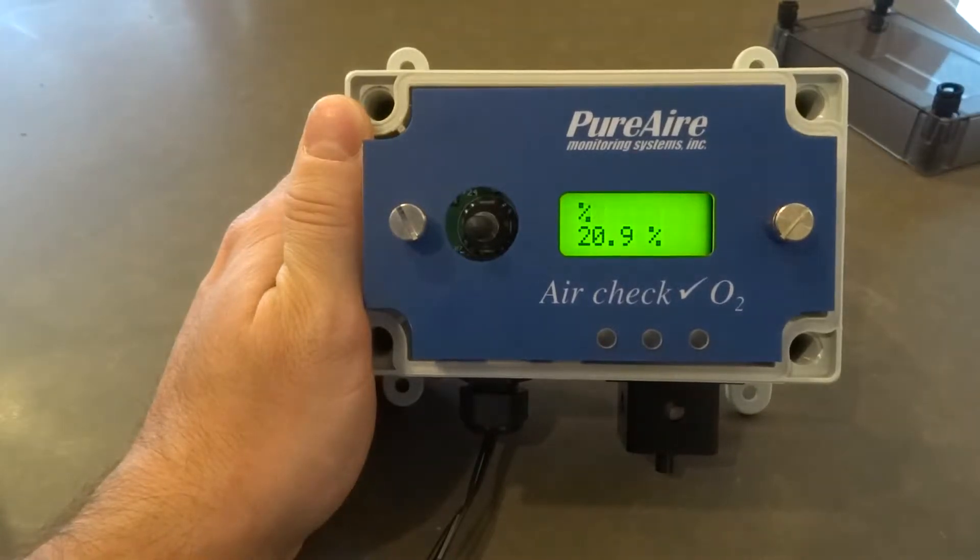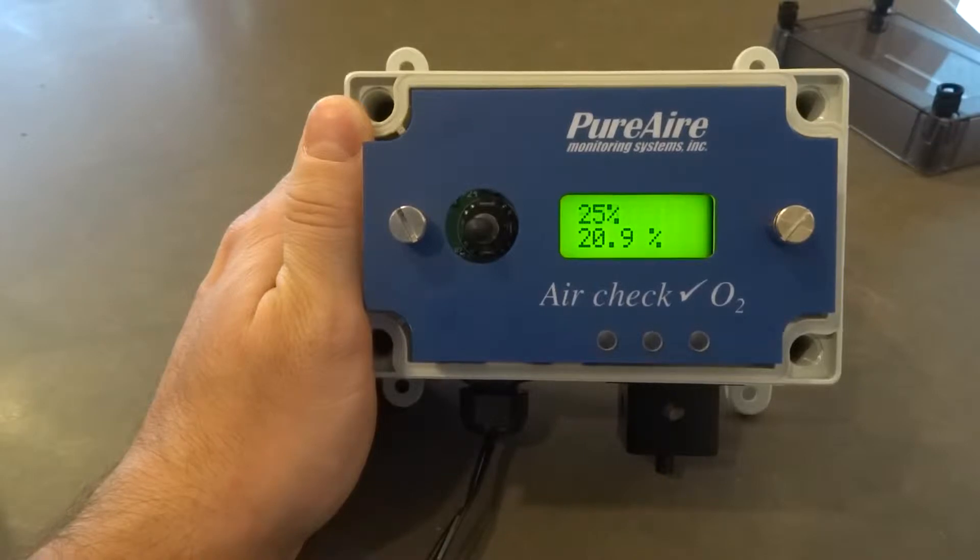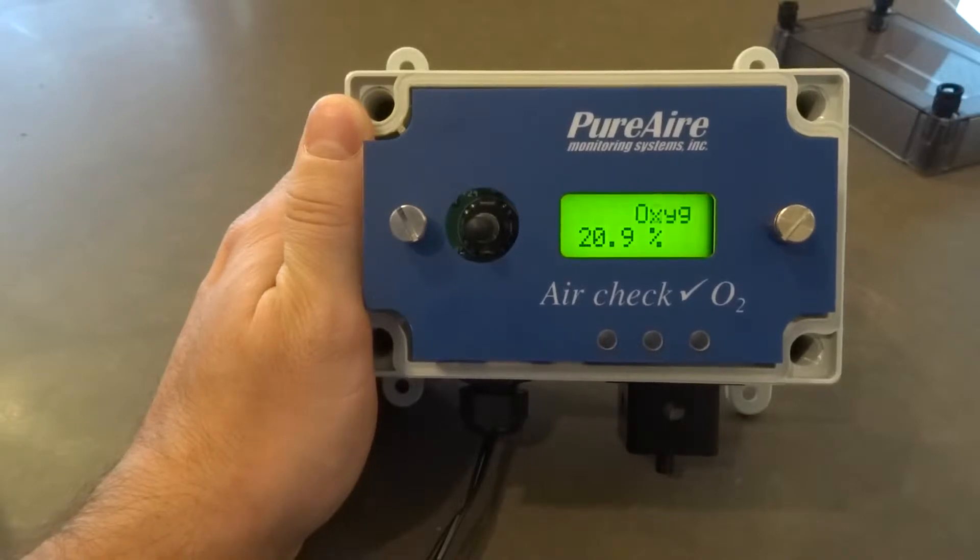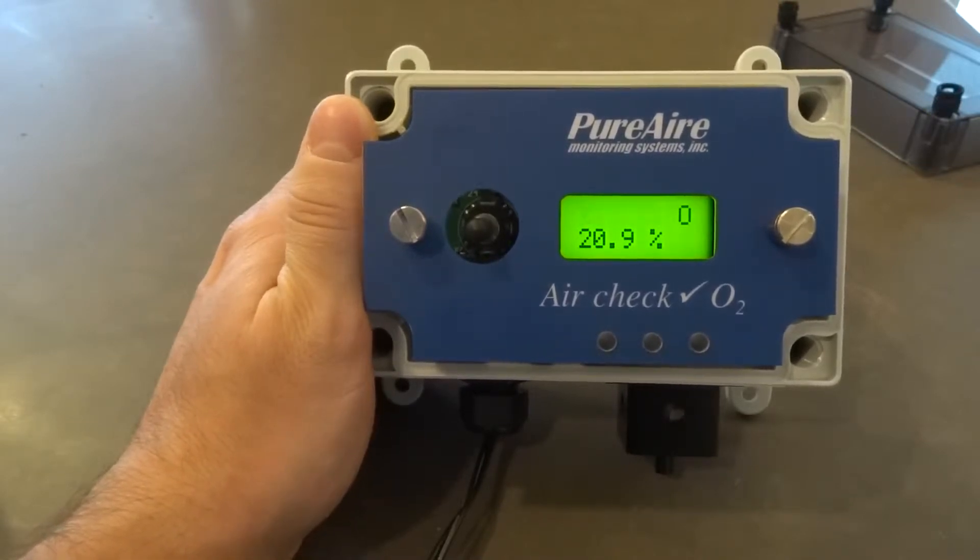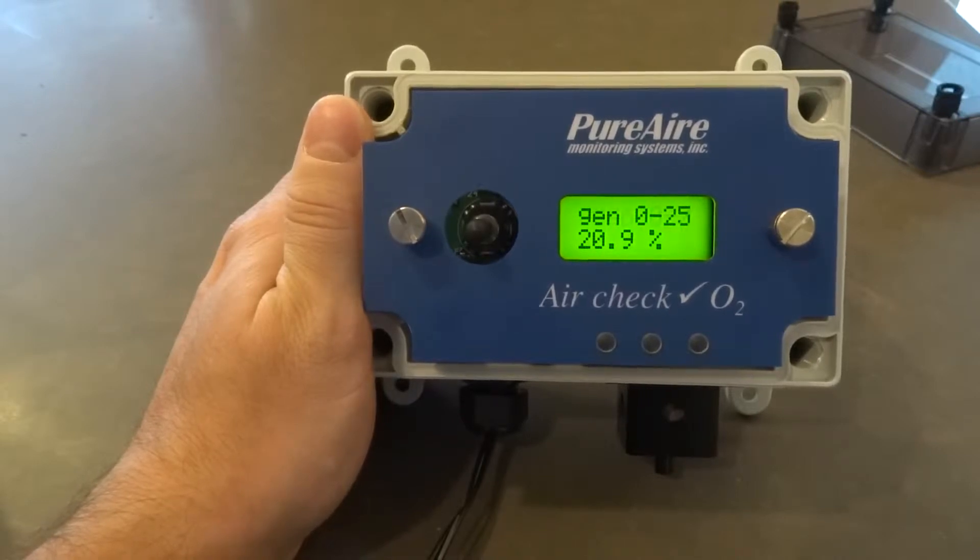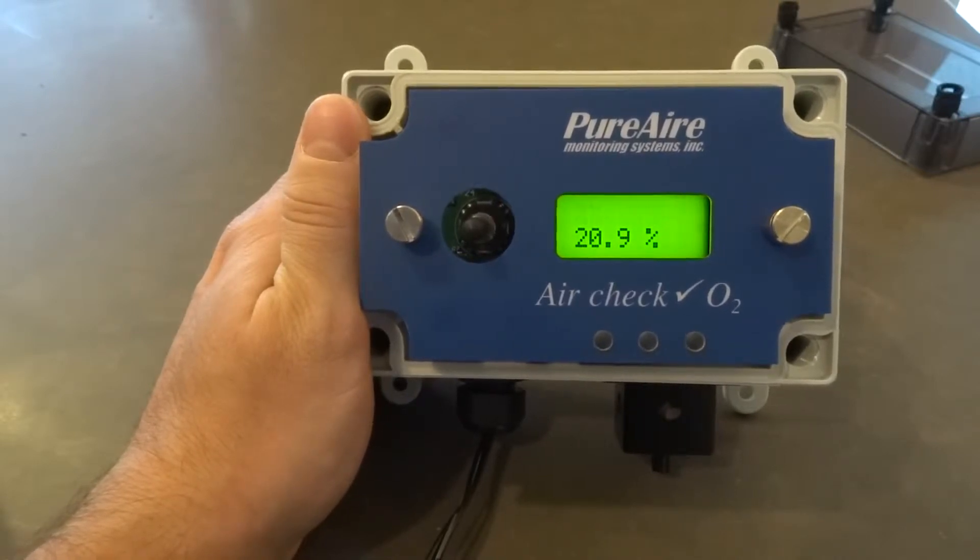In the last tutorial I showed you how to maneuver through the menus using the joystick function. In this tutorial I'd like to subject the sensor to some gas so we can trigger some alarms and you can see what happens.